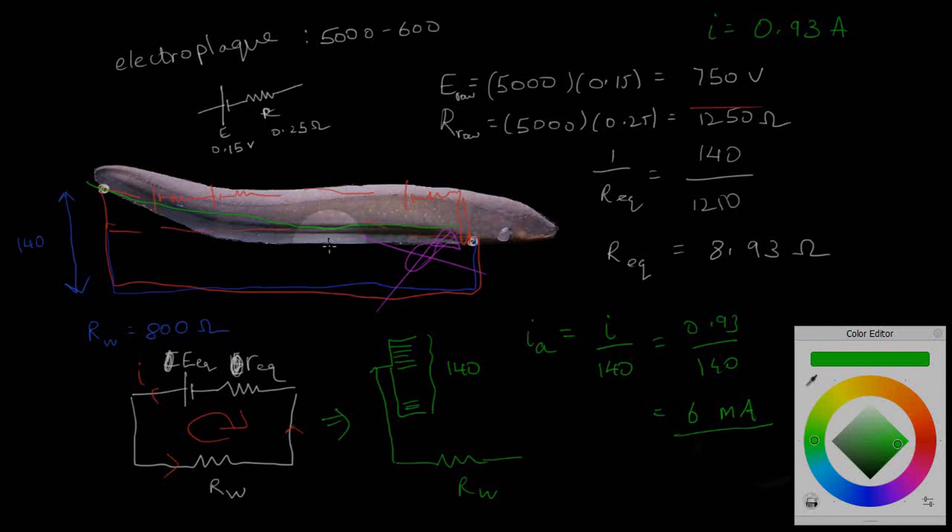But 6 milliamps, yes, it is a dangerous current when it flows across the body along that body and doesn't affect the heart or lungs or other essential vital organs. The fish should very much be able to survive. So this is how we use Kirchhoff's laws. See you in the next video.